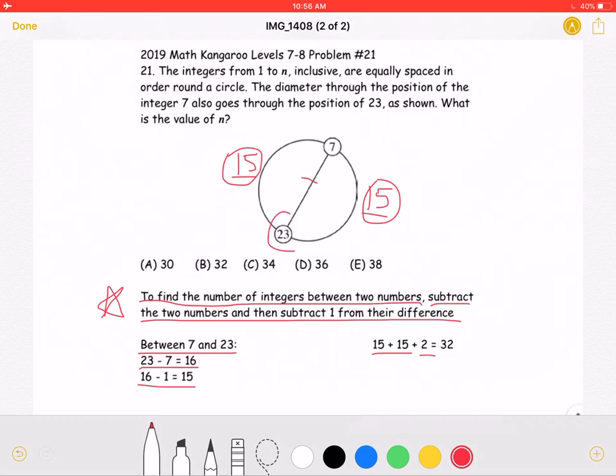because we also must include 23 and 7, two additional integers. If we add this up, we will get a total of 32 integers, which means that n is equal to 32.